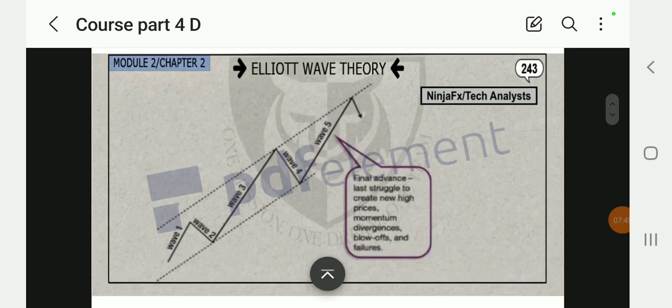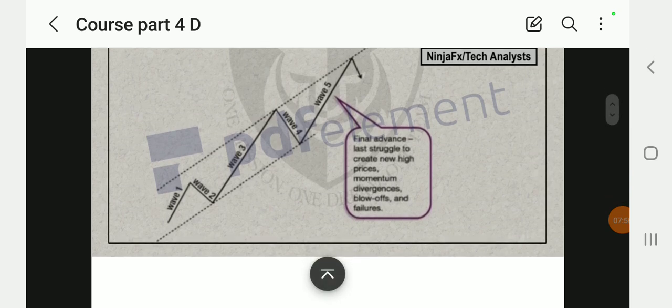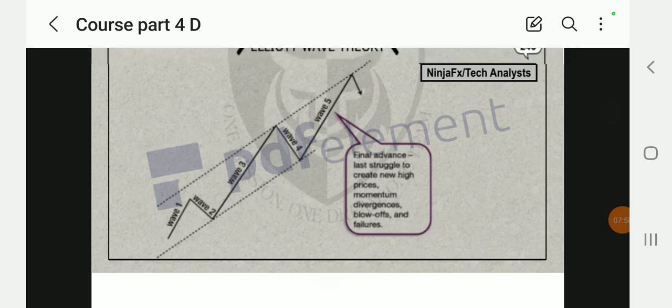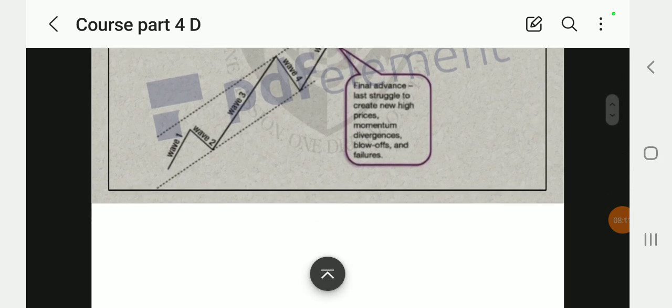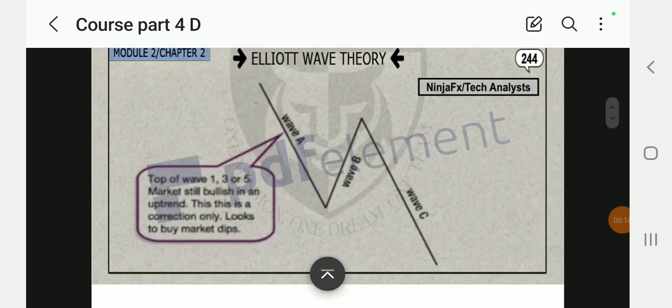Wave five: final advance, last struggle to create new high price momentum, divergence, blowoffs, and failures. We see the market is selling, but we have a wave five. Until the market corrects and breaks the channel base, the lower trend line, then we could consider a reversal pattern to form. Then go hard on the position, maximize it.